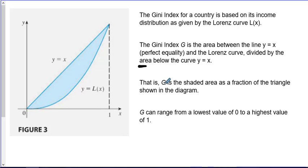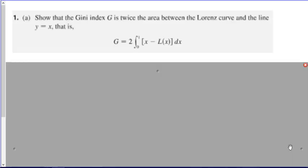G, the Gini index, is that shaded area as a fraction of the area of the triangle that's shown. So that's how you can end up with no area, or 100% of the area. Let's look at a few questions that involve the Gini index.